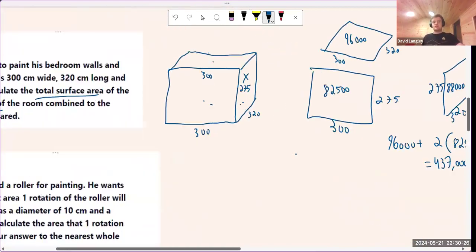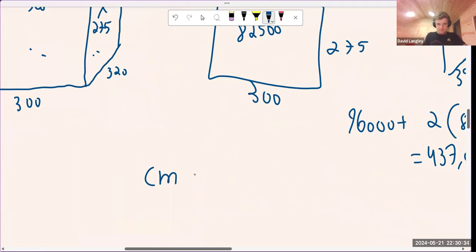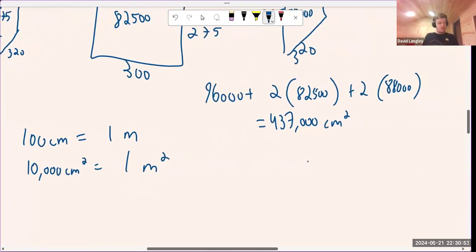Then it asks for the nearest meter squared, and so this is another little bit of a challenge here. 100 centimeters equals one meter, but if we want to convert centimeters squared to meter squared, we need to square this. And so what is 100 squared? It's 10,000 centimeters squared equals one meter squared.